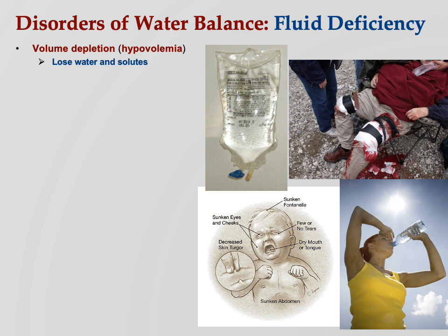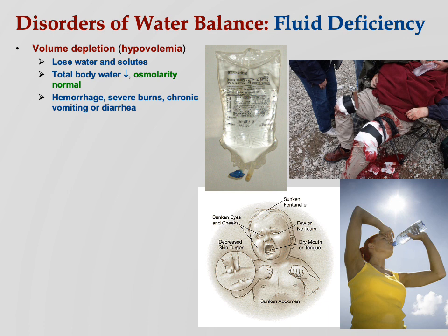When would hypovolemia happen? Like a hemorrhage — if you're losing blood, you're losing blood plasma, which is mostly water, and you're losing solutes as well. So your total body water is going to go down, but osmolarity is going to stay normal. Osmolarity is the proportion of solutes in the fluid, so if you're losing both water and solutes, the proportion stays the same. Hemorrhage, severe burns, chronic vomiting, and diarrhea could all cause hypovolemia.